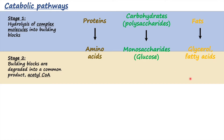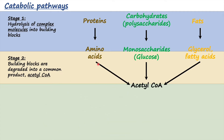In the second stage, these building blocks are subsequently degraded into a common product called acetyl CoA. Whether they originate from proteins, carbohydrates, or fats, all building blocks are degraded into acetyl CoA. Some energy is released in the form of ATP during this conversion, however the amount of energy released here is very small compared to what is produced during the third stage.